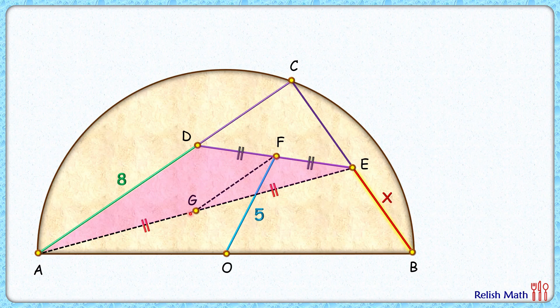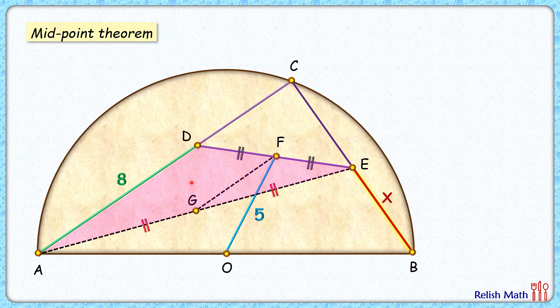The midpoint theorem states that if we join midpoint of two sides of a triangle, then it's always parallel to the third side. That is, AD will be parallel to GF. And it is also half of the third side, so GF will be half of AD, that's 4 centimeters.